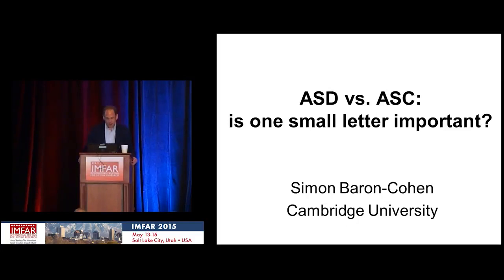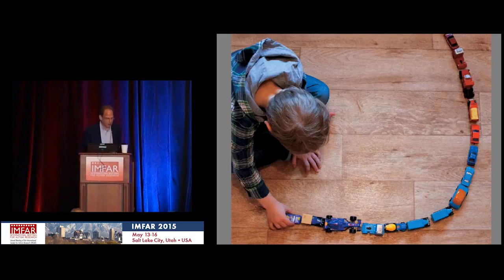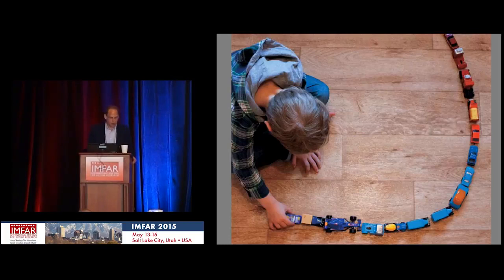I'm going to be talking about autism spectrum disorder versus autism spectrum condition. I'll start with a couple of images to remind us of what we're looking at. Here we have almost the archetypal image of a child with autism who is playing alone, not part of his peer group. But I want to comment that he's doing something very intelligent in his behavior — he's making patterns.